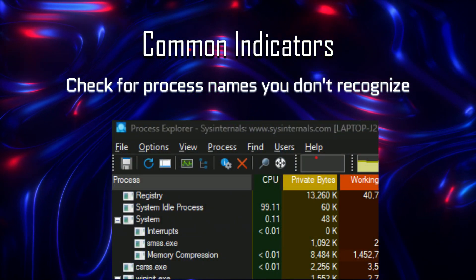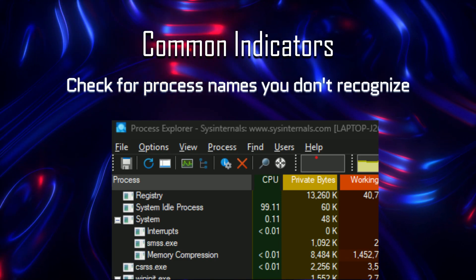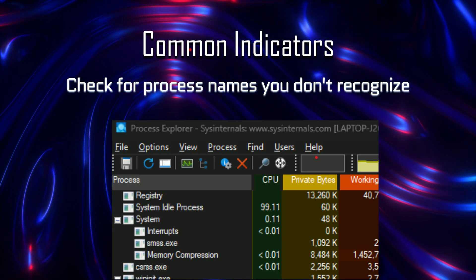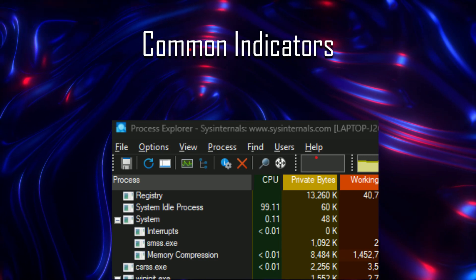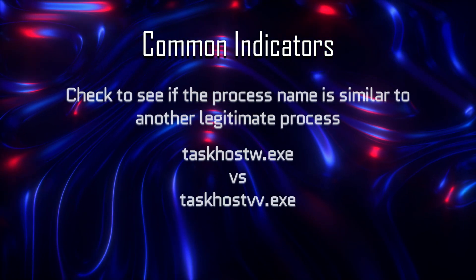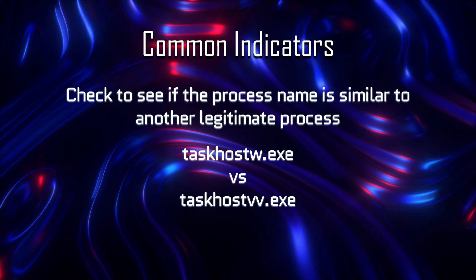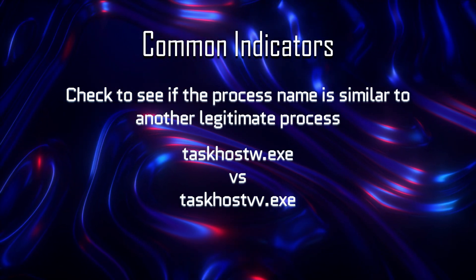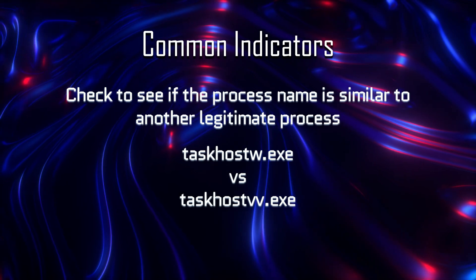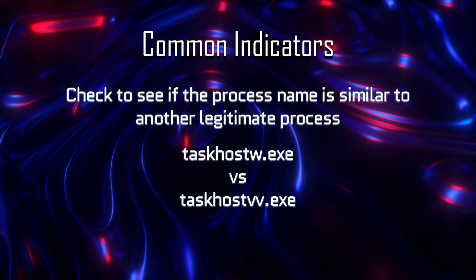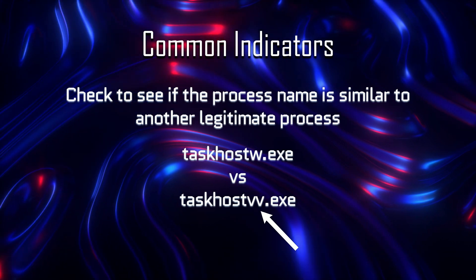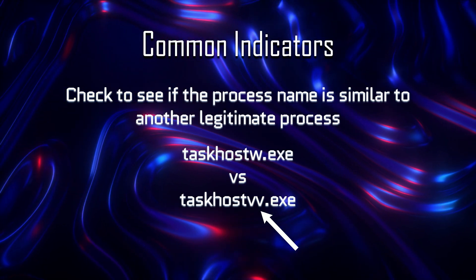First, make sure you check for process names that you don't recognize. Having a good understanding of what is to be expected on the system can help identify activity that could be malicious. Make sure to check if the process name is similar to a legitimate process. Malware could have a process running with a misspelling to masquerade as legitimate — for example, taskhostw.exe with two V's instead of a W.